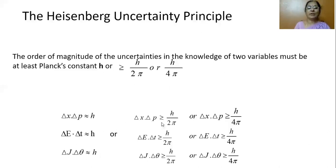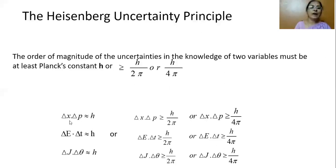In another way, we can write: delta x delta p is greater than or equal to h by 4 pi; delta E delta t is greater than or equal to h by 4 pi; delta J delta theta is greater than or equal to h by 4 pi. Thus the product of uncertainties in both variables is at least equal to h, or h by 2 pi, or h by 4 pi — all of which are constants. So we can express the uncertainty principle in three different ways.